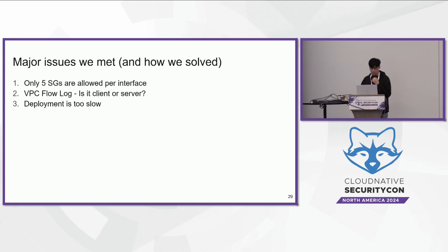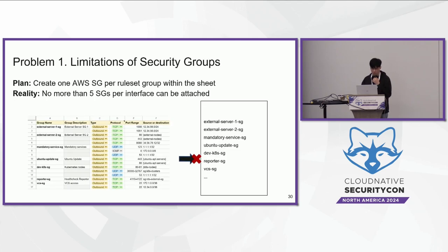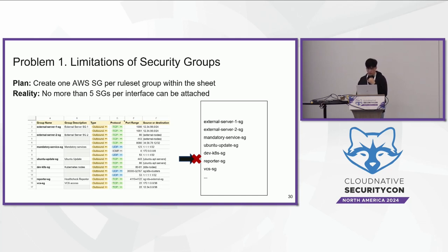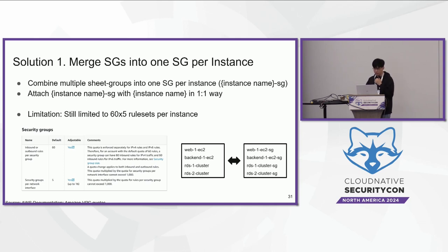We encountered three major issues. First, we discovered that only up to five security groups are allowed per AWS network interface. Our initial plan was to create one AWS security group per ruleset group, but we quickly hit this limitation. To work around it, instead of dividing rulesets into one security group each, we combined multiple groups into one security group per instance, then attached them in a one-to-one relationship per instance.